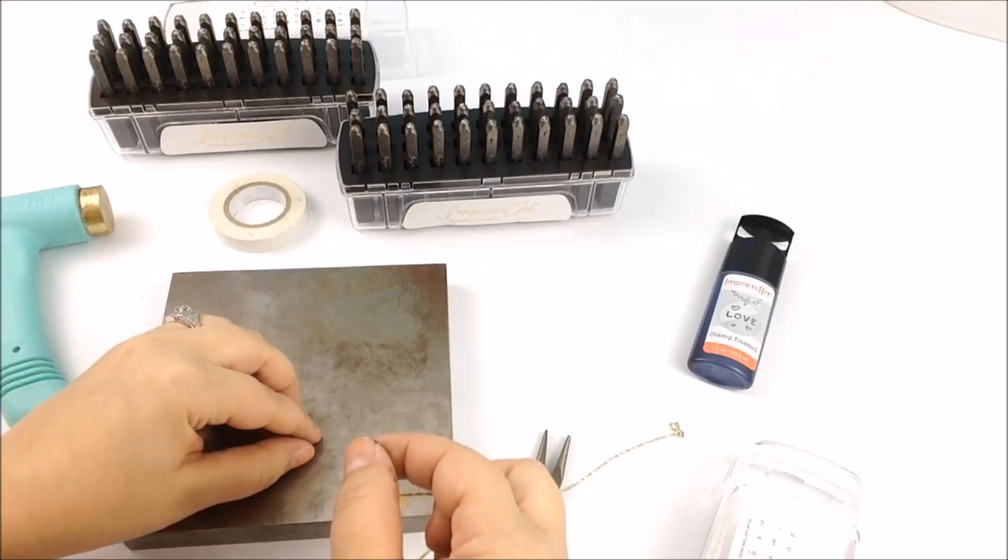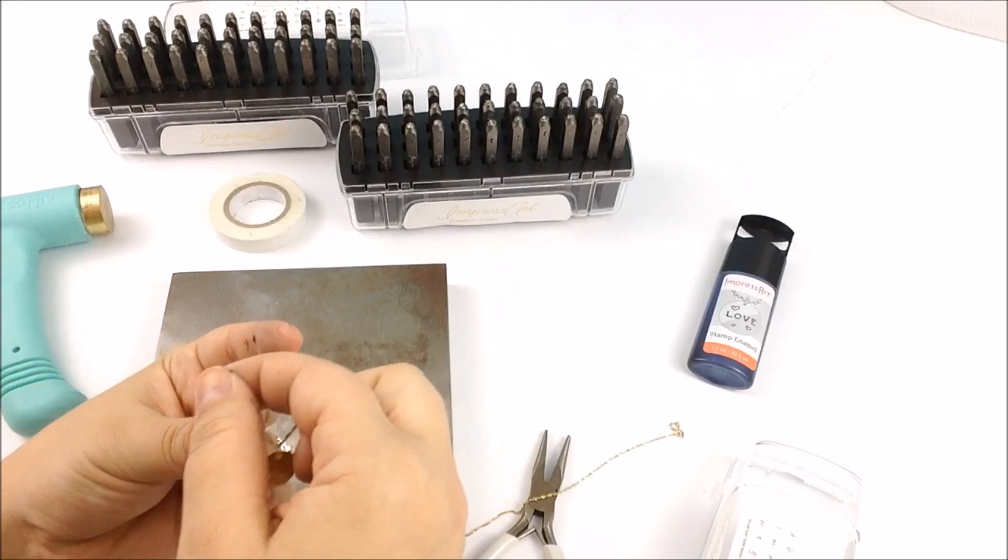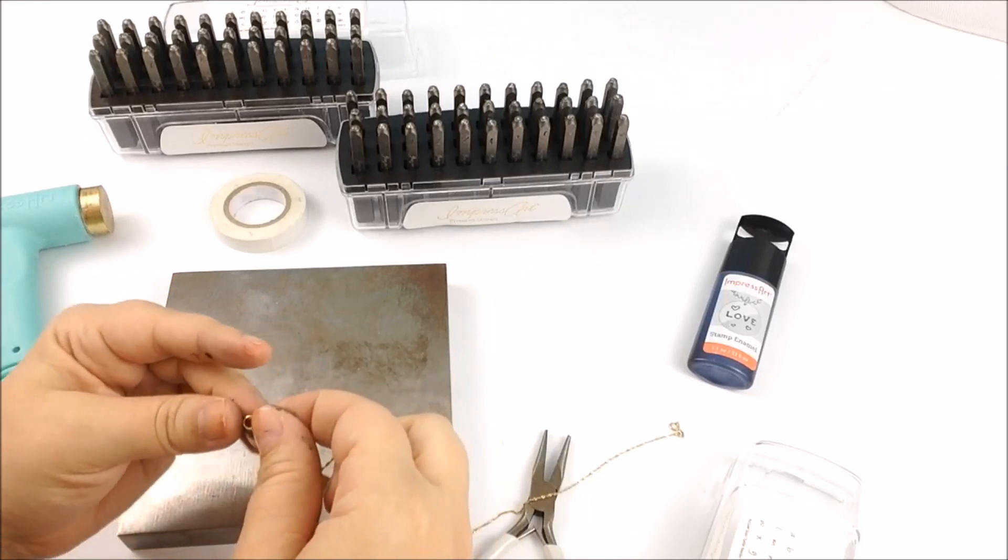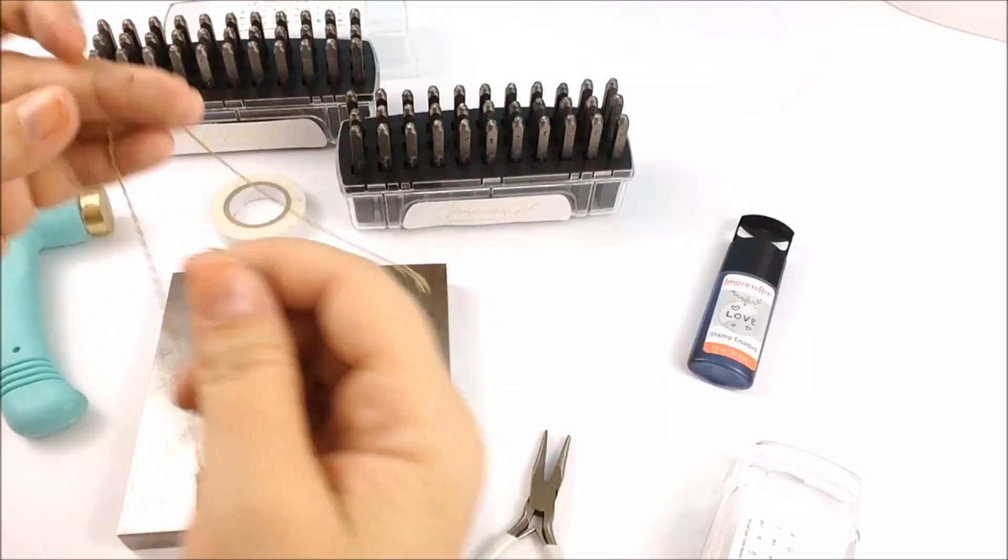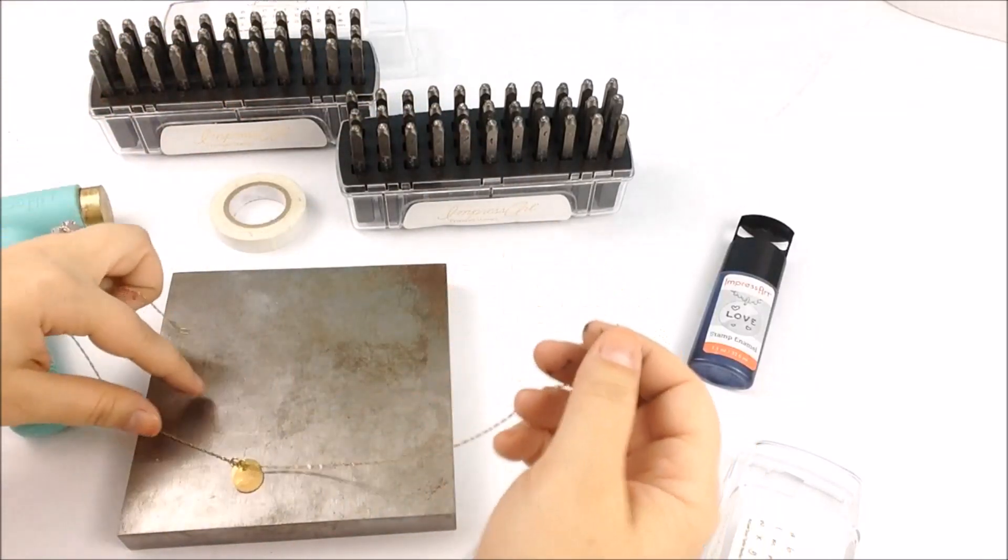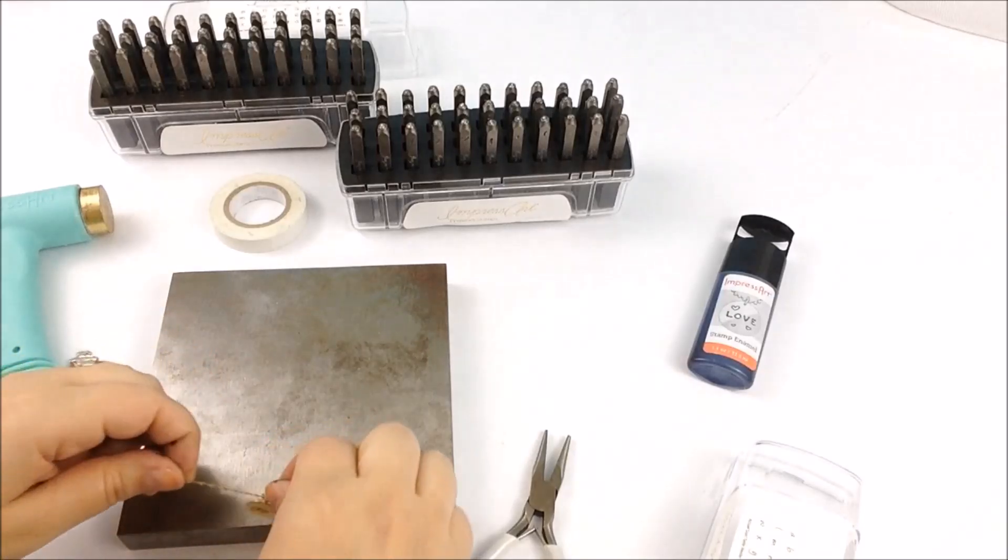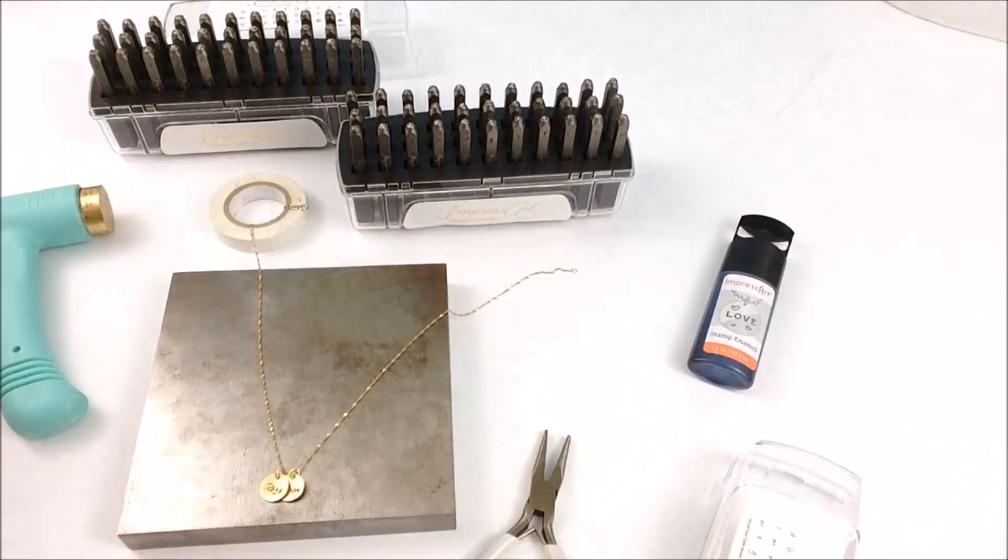And again, any nice fine chain is going to work well to stick with the delicate theme we've got going here. And if you're looking, you want to choose a one millimeter chain. And a length of about 16 inches is pretty well perfect. So with that, I've got my delicate charm necklace.